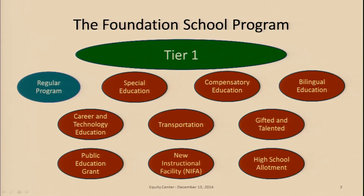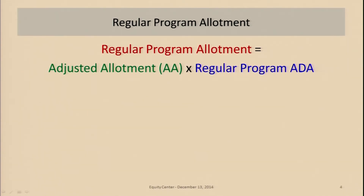So to refresh you again: remember there are 10 allotments in Tier 1, the basic program tier of the foundation school program for M&O. You have your regular program allotment, which we're going to talk about in this session, and the other nine, which we'll talk about in subsequent sessions. It's a very simple process — you take your adjusted allotment and multiply it by your regular program ADA. Just that one step. That's all there is to it.